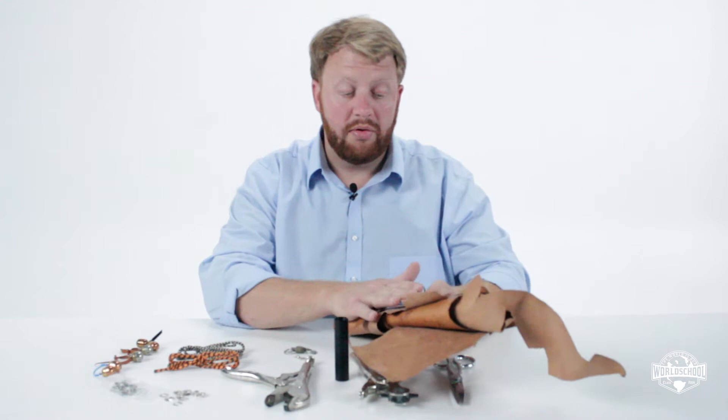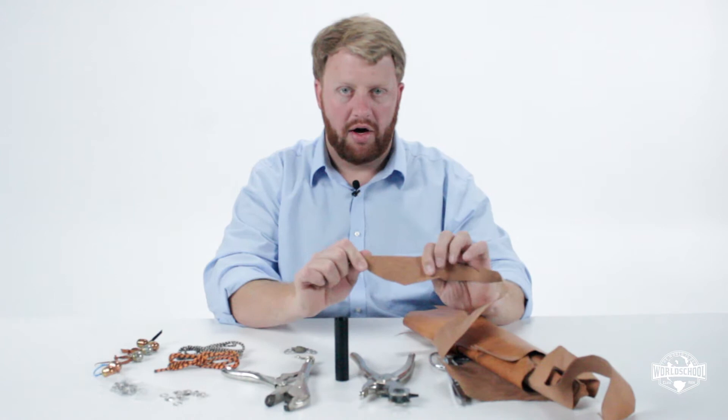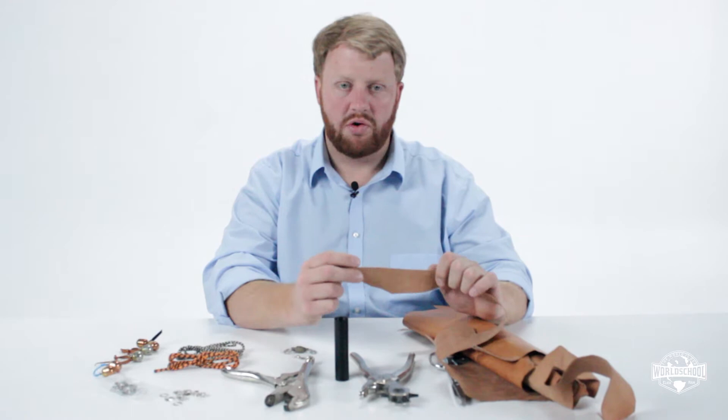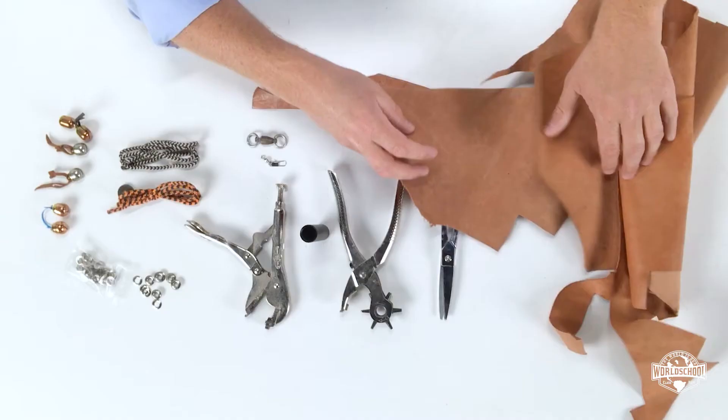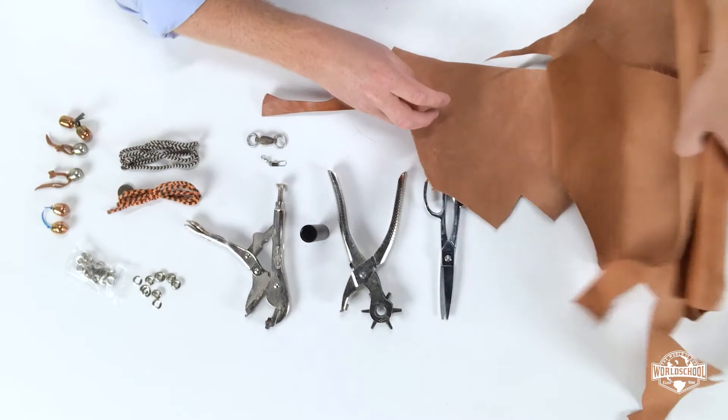And we're going to use leather, but not just any leather. This is kangaroo leather. Kangaroo is our best choice because it is very lightweight, but it is very, very strong. In fact, this is what whip makers use to make whips nowadays because it's one of the strongest leathers on the planet.